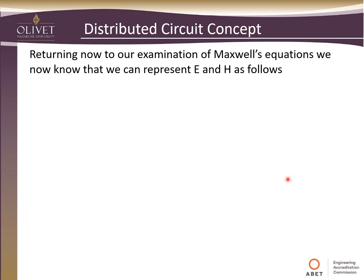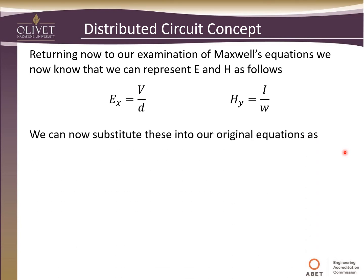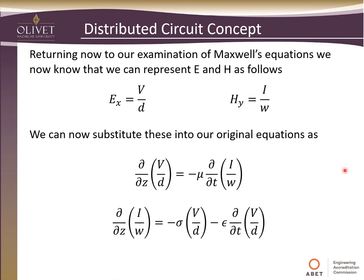Turning now to our examination of Maxwell's equations, we know we can represent the electric and magnetic fields in terms of voltage and current, as derived a couple of slides back. We take these and substitute them back into our original equations. If we take Faraday's law, we can substitute these back in. Likewise, we can take Ampere's law. Where we had E and H — electric and magnetic fields — and the time derivative of the electric field, we can put these values directly in. This is the start down the path of this distributed circuit model.